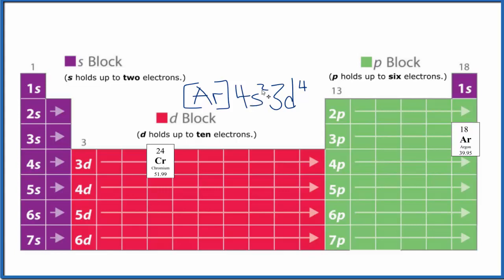We'll end up with 4s1 3d5, and this is a much more stable electron configuration. So chromium is an exception, and the d orbital is more stable when it's half full with 5.